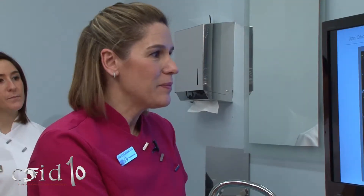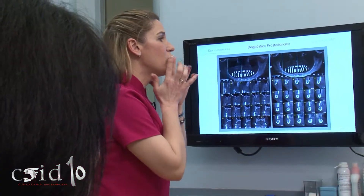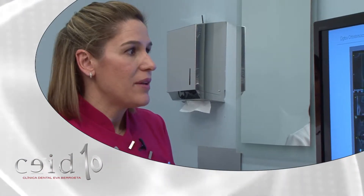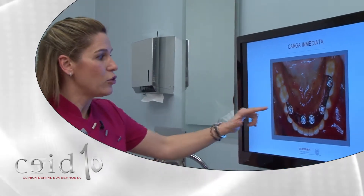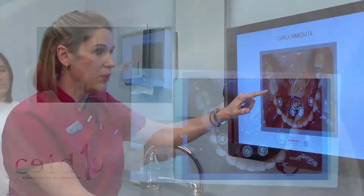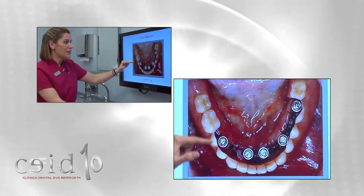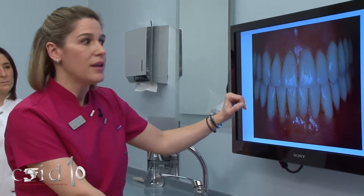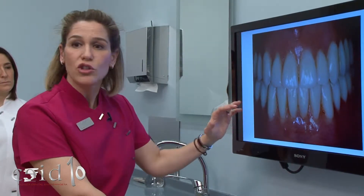Esta paciente presenta adecuado hueso para colocar los implantes en la zona anterior, delante del nervio mentoniano, y colocaremos cinco implantes dentarios. La paciente irá a la clínica del cirujano y, seguido de la cirugía, vendrá a la consulta para que yo pueda conectar una dentadura provisional ya preparada a los implantes. El mismo día, la paciente recibirá una prótesis fija atornillada a estos implantes y podrá hacer una vida relativamente normal. Va a llevar unos dientes que ya no se los va a poder quitar.